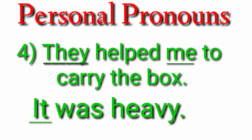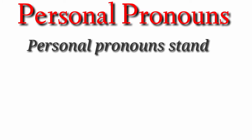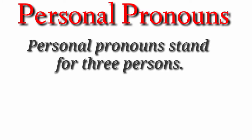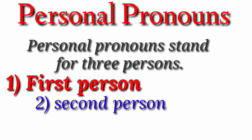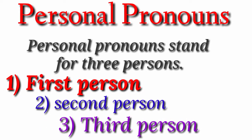So all the words we have used here — I, you, we, he, she, they, me, it — are pronouns which refer to the names of persons or things, and they are called personal pronouns. They stand for three persons: first person, second person, and third person.